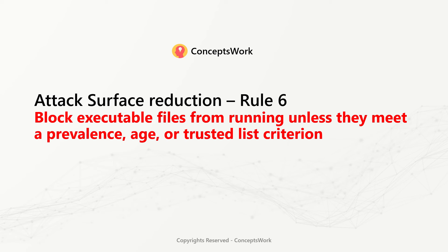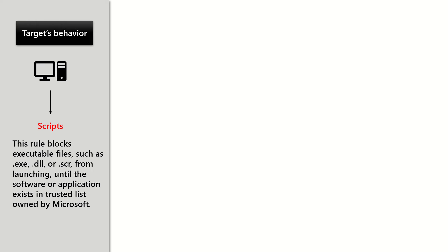Rule 6: Attack Surface Reduction — Block executable files from running unless they meet a prevalence, age, or trusted list criterion. The purpose of this rule is to block execution of any executables until and unless they are trusted by Microsoft. Microsoft maintains a list, and if your installation file or the software or application does not exist in that particular list, it will not be allowed to run.